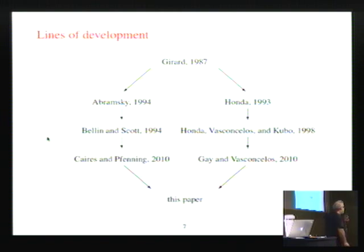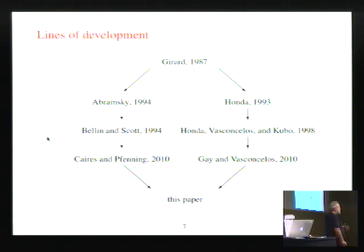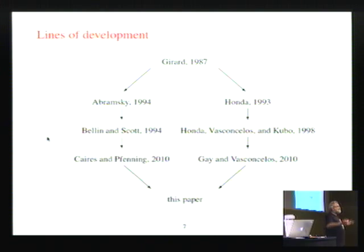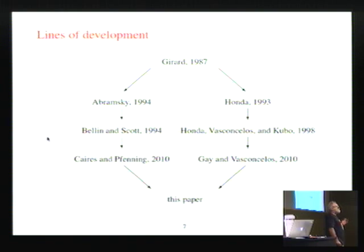I could take lambda calculus and translate that into pi calculus — that was the process calculus they used. And I can do that: I can embed it such that reductions in the lambda calculus correspond to reductions in the process calculus. And that's what they did — linear logic embedded into process calculus, such that the reductions correspond. But just because I did that, I wouldn't say this means lambda calculus is telling us about parallelism, just because I can interpret it in pi calculus. So it was nice that this correspondence existed, but it didn't really mean that linear logic was necessarily telling us about parallelism.